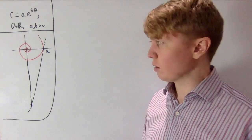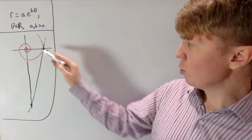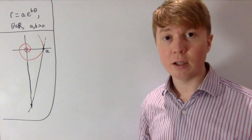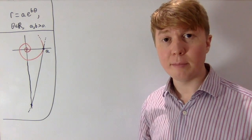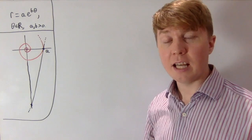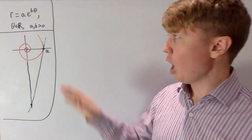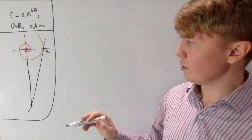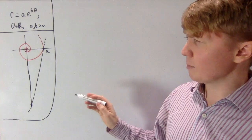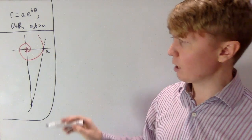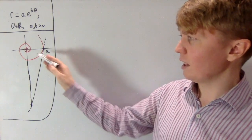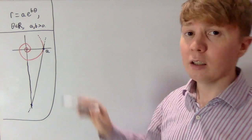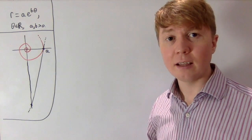This is really interesting because the spiral actually wraps around the origin infinitely many times. As θ gets negative, r becomes really tiny but never actually reaches zero. So even though it's coiled around the origin infinitely many times, the logarithmic spiral has a finite length, and that length equals the length of this tangent up to point a.